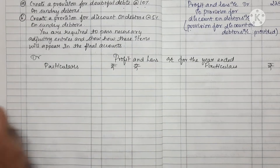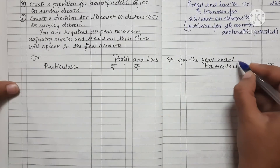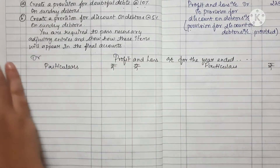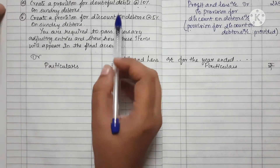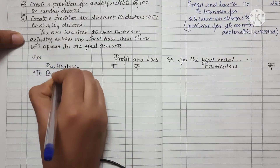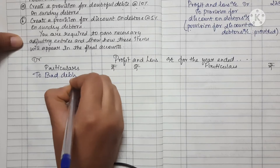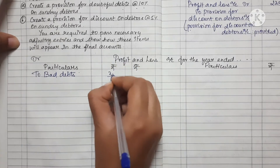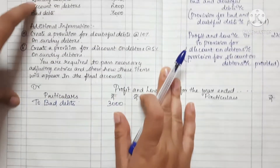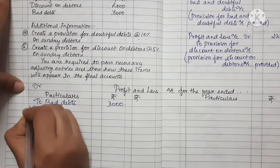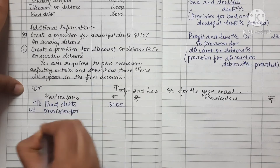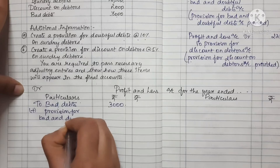Let's look at the Profit and Loss Account for the year. Debit side particulars: first we have bad debts 3,000. Next, provision for bad and doubtful debts — we add the new provision. Then provision for discount on debtors. Bad debts 3,000 plus provision for bad and doubtful debts, plus provision for discount on debtors.